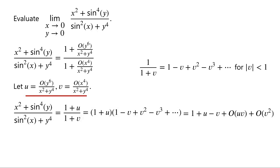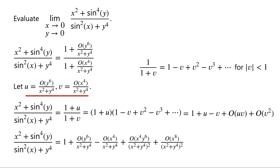Recall that u equals big O of y to the power of 6 over x squared plus y to the power of 4, and v equals big O of x to the power of 4 over x squared plus y to the power of 4. So the function can now be written as 1 plus big O of y to the power of 6 over x squared plus y to the power of 4, minus big O of x to the power of 4 over x squared plus y to the power of 4, times y to the power of 6 over x squared plus y to the power of 4 all squared, plus big O of x to the power of 8 over x squared plus y to the power of 4 all squared.